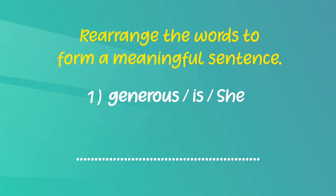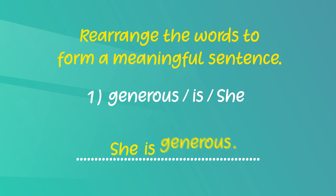What is the subject here? You have to write 'she' first. Now what should come after she? In a simple sentence it is the verb that comes next. What is the verb here? It is 'is'. So 'is' should come after that. Now the last word is an adjective — it is 'generous'. She is generous.